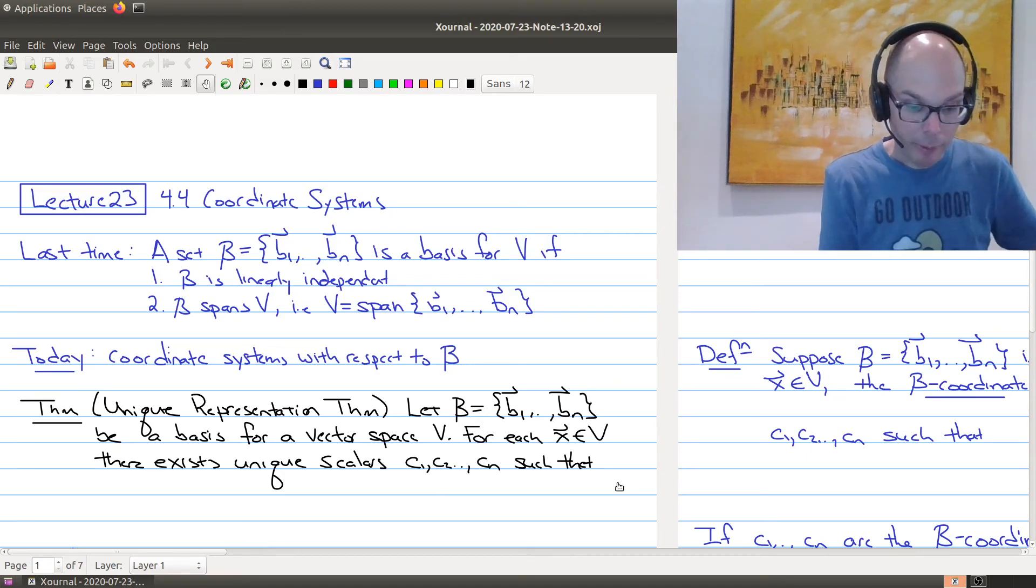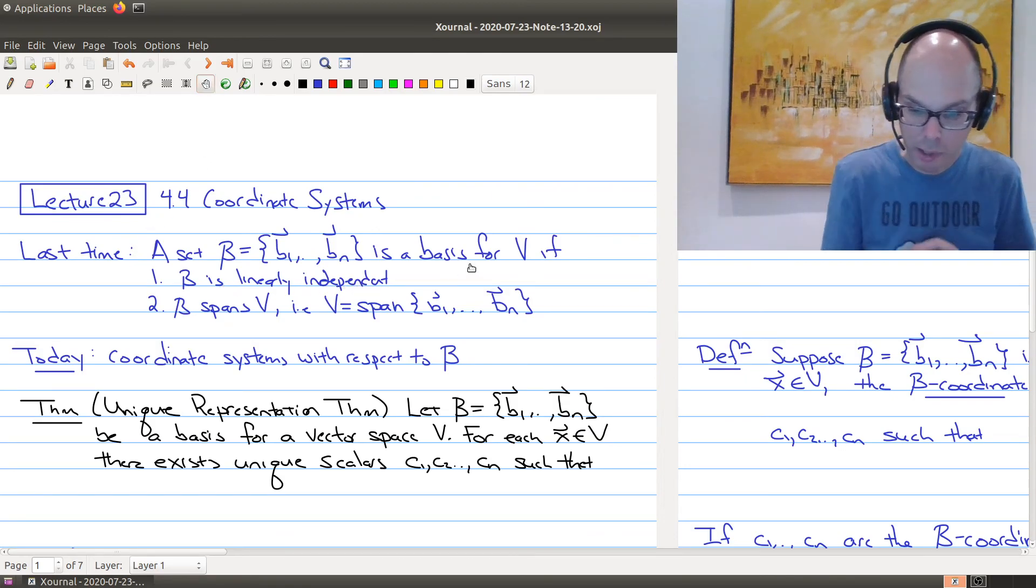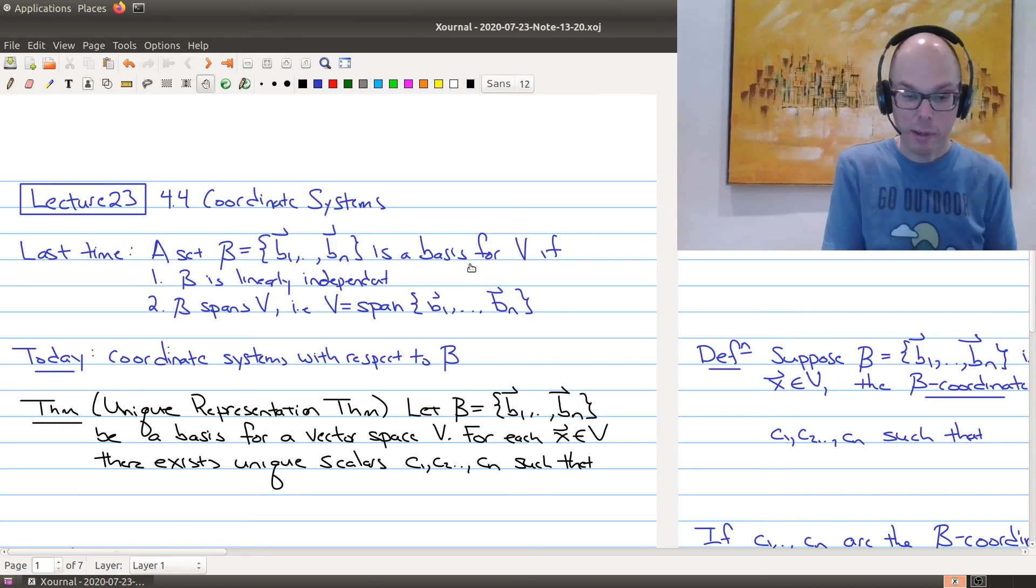Just to recap of where we are, last time we introduced what a basis is. A basis is a collection of vectors inside of your vector space that satisfies two properties. First, the set of vectors must be linearly independent, and the second property is that the set of vectors in B must span V.